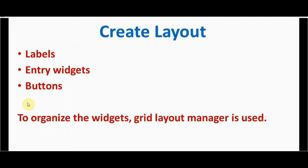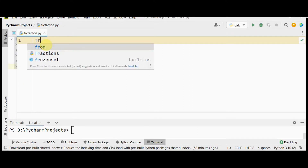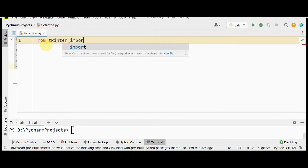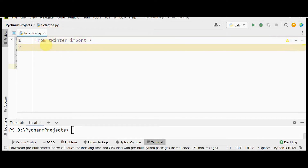To create the layout, I have used three widgets: labels, entry widgets, and buttons. Two labels represent player one and player two. Entry widgets get their names. Ten buttons total — buttons one through nine represent the three by three grid, and one more button for the restart option. To organize these widgets I have used the grid layout manager.